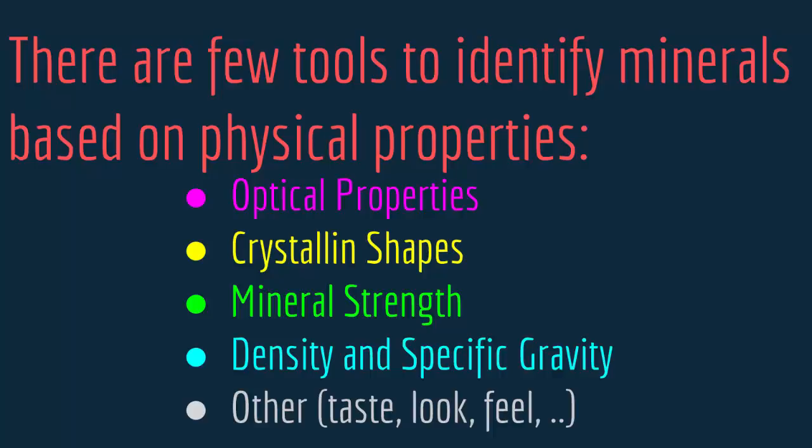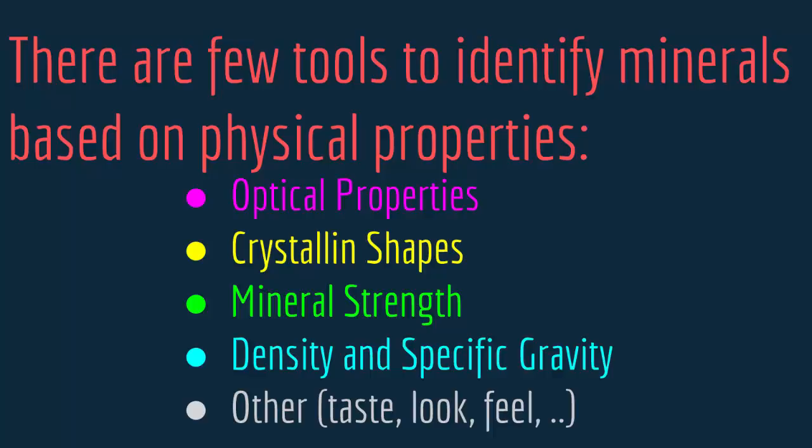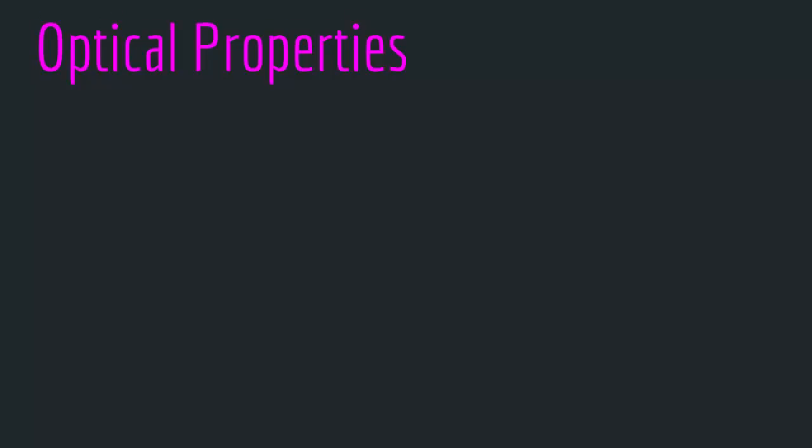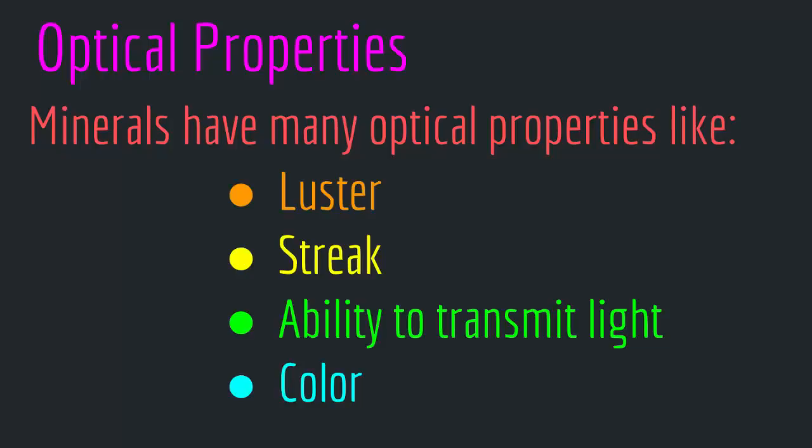Let's look at the first one: optical properties. Minerals have many optical properties like luster, streak, ability to transmit light, and color. All these are optical properties and physical properties that can be used in order to identify a mineral.